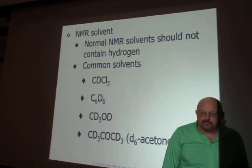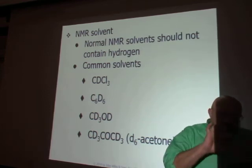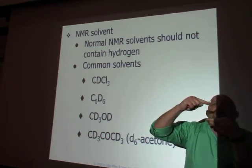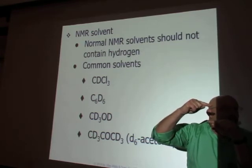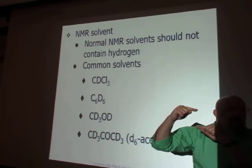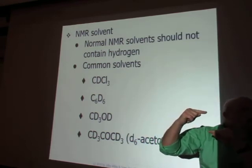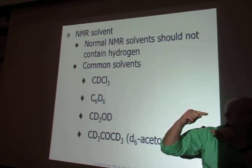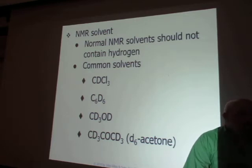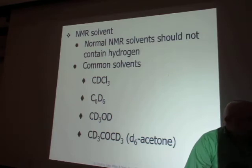A 100 mL bottle — just a little tiny bottle — runs about $180. That sounds like a lot, but we only need a half a milliliter to run an NMR spectrum. So that 100 mL bottle will do at least 200 samples — about a dollar per sample for solvent. So that's not too bad. We need deuterated solvents.